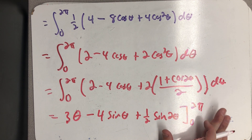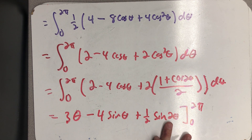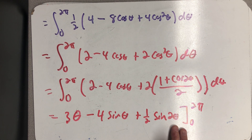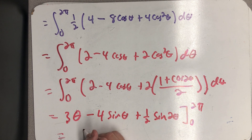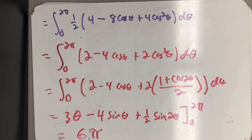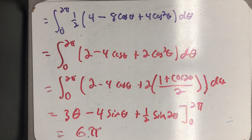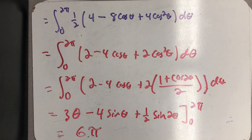Nicely enough, the sine of 2π is 0 and the sine of 0 is 0. Evaluating 3θ from 0 to 2π gives 6π, and the sine terms vanish. So all I end up with is 6π, and that's the area of that particular cardioid.